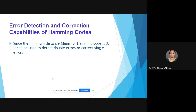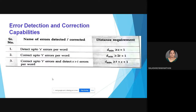The error detection and correction capabilities of the Hamming code: since the minimum distance is 3, it can detect double errors or correct single errors. To detect up to s errors per word, d_min must satisfy d_min ≥ s + 1. To correct t errors, d_min ≥ 2t + 1. To simultaneously correct up to t errors and detect s errors where s > t, d_min ≥ t + s + 1.